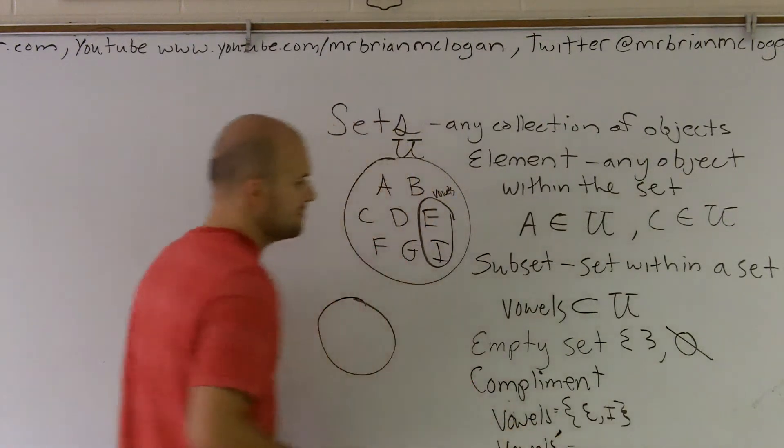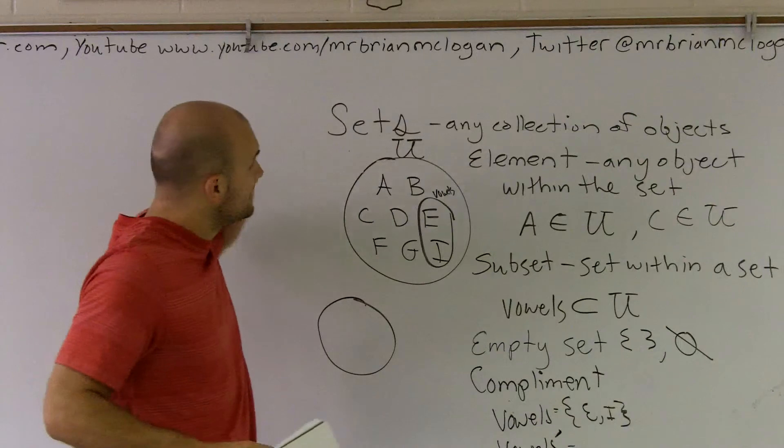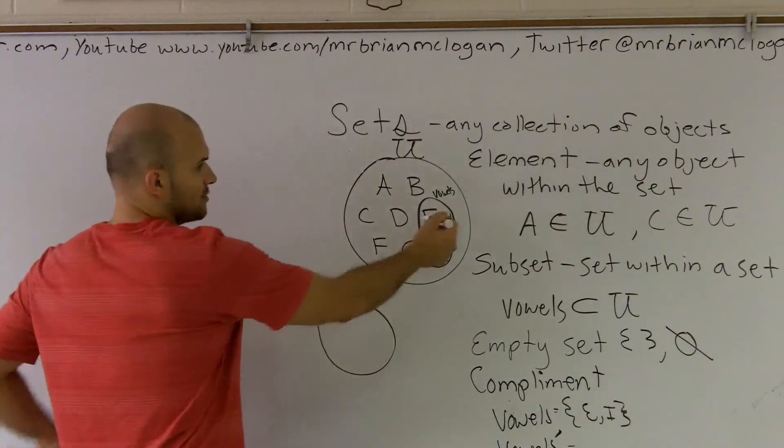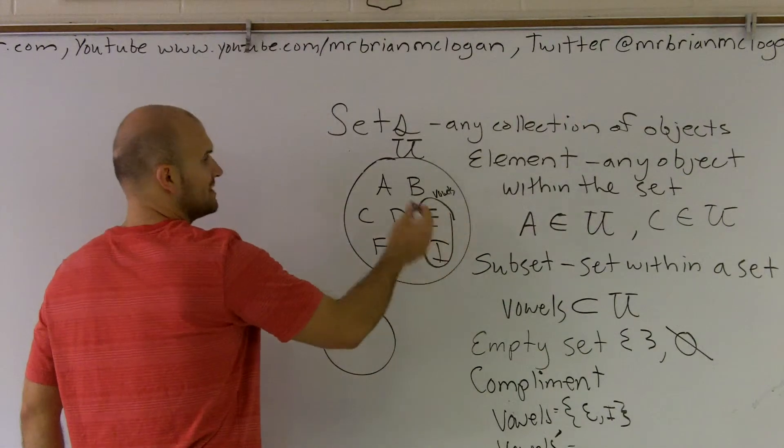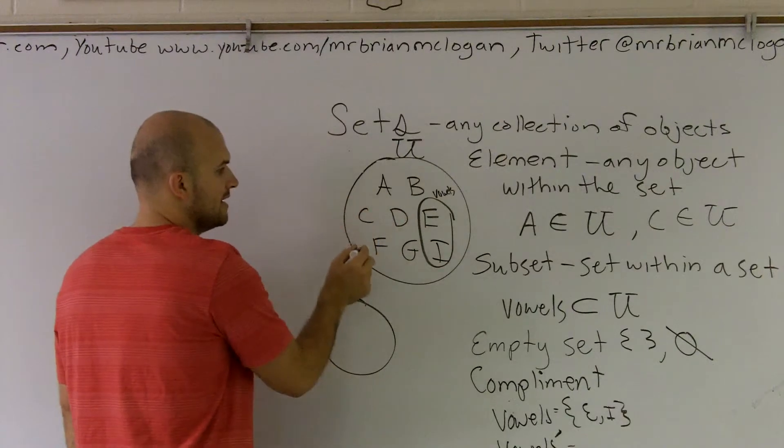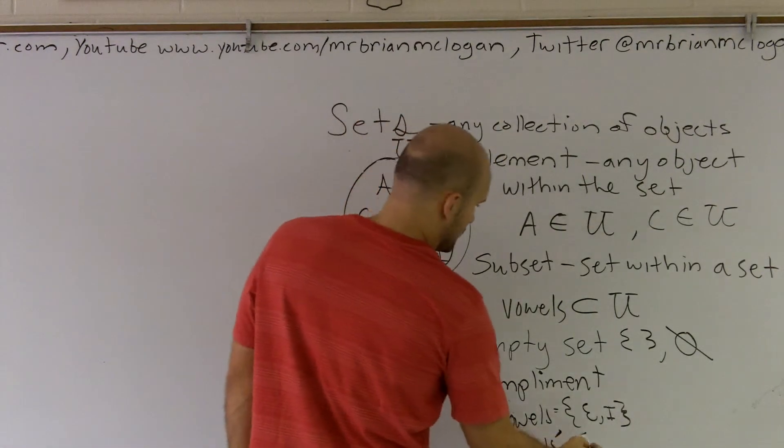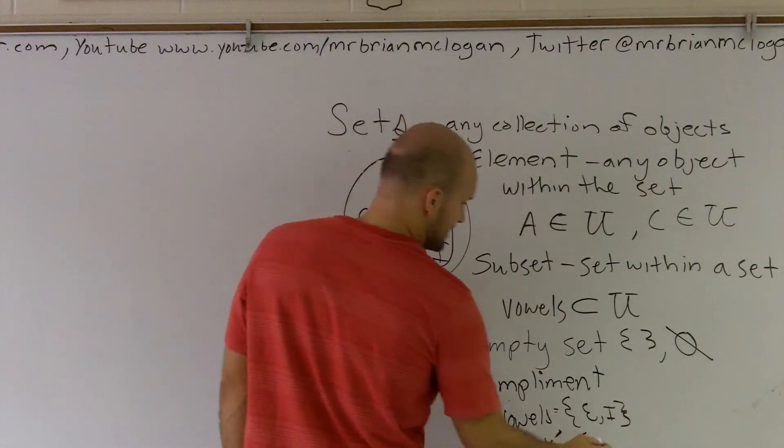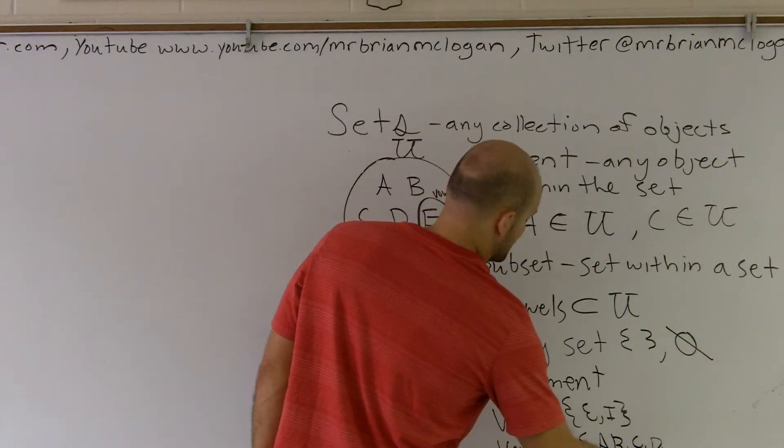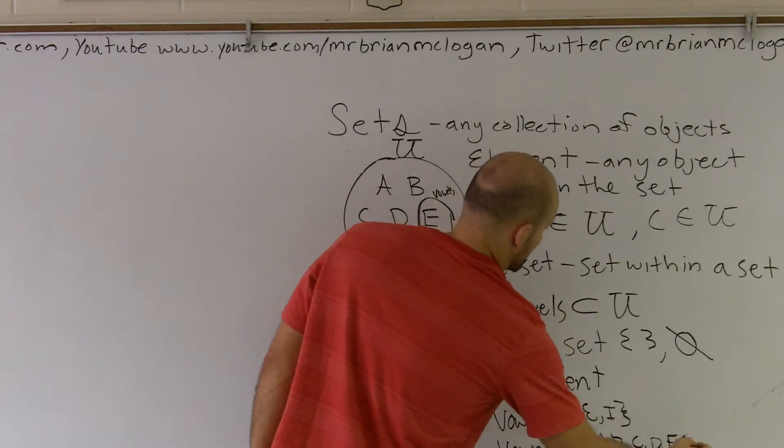Well, what the complement means, that means everything that's not in vowels, but that's still in my universal set. So, I've got to look at this. So, what's not in this subset, but that's in the rest of my universal set? Well, you can say it's A, B, C, D, F, and G. So, I can write it in brackets, and I just write A, B, C, D, F, and G.